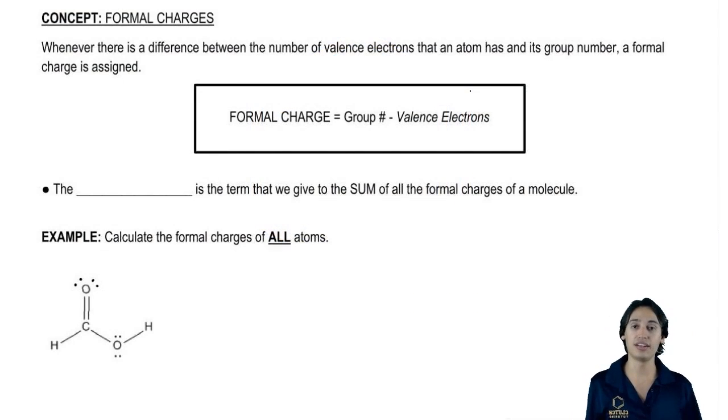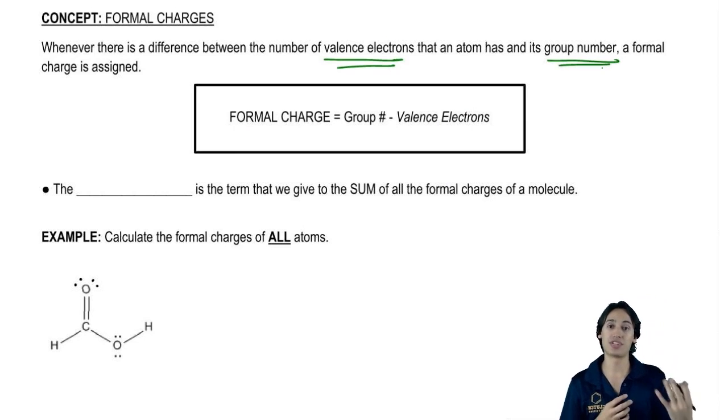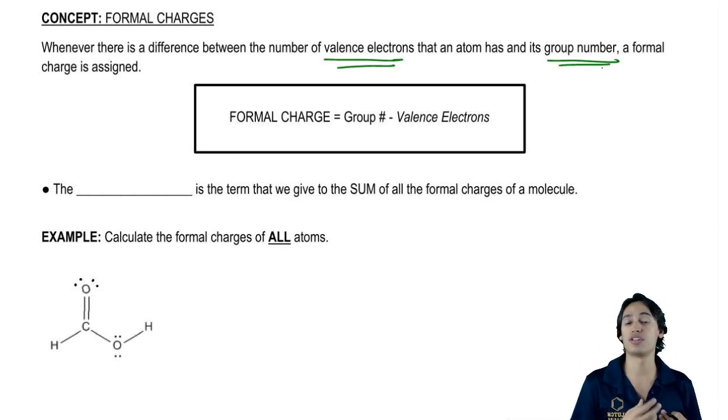Basically, a formal charge is assigned whenever there's a difference between the number of valence electrons an atom wants to have and the number of valence electrons it actually has. So remember that the group number is how many it wants. The valence electrons, the sticks and the dots, are the ones it actually has.